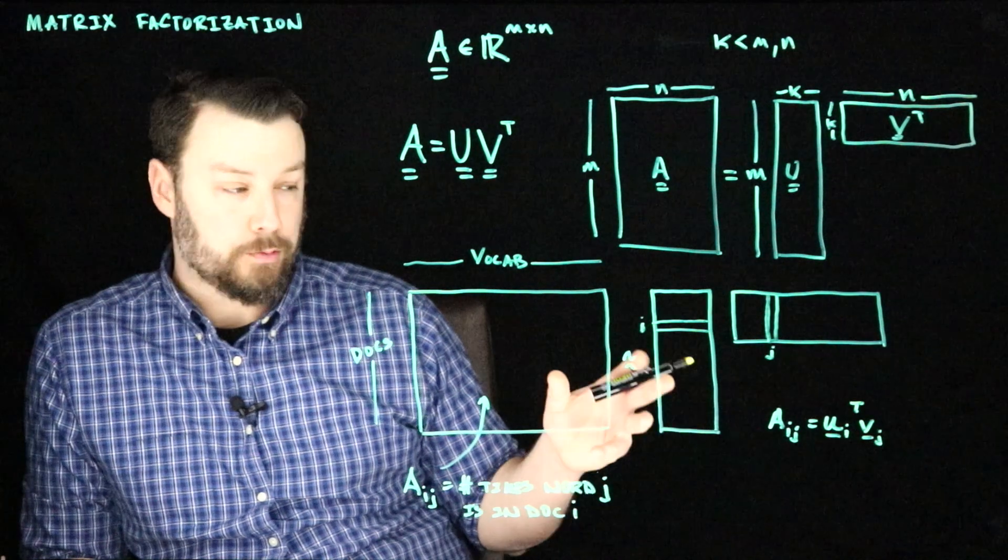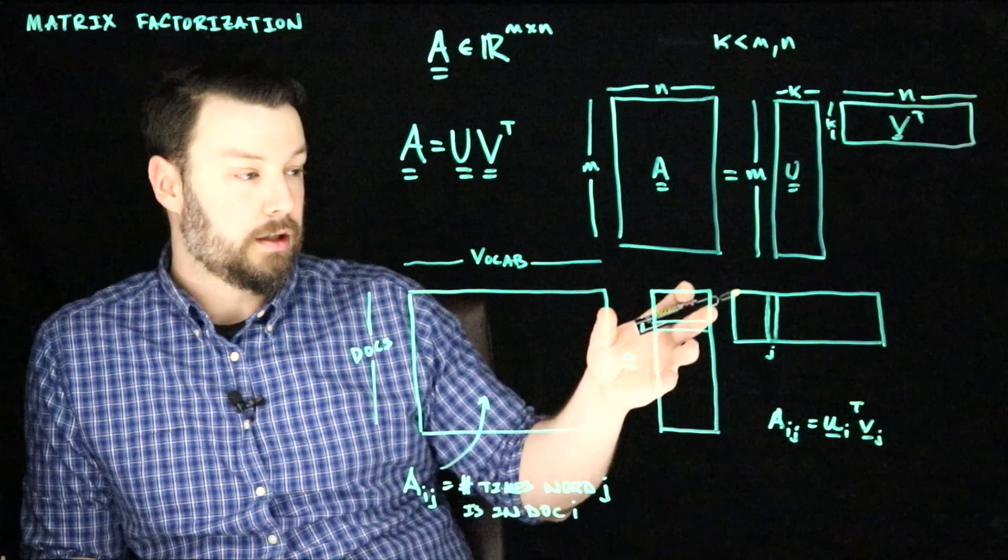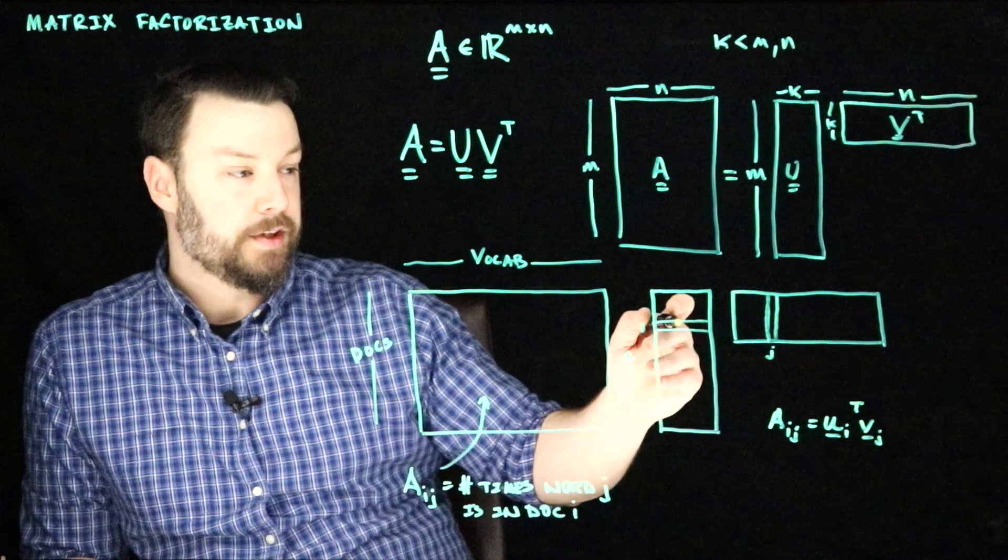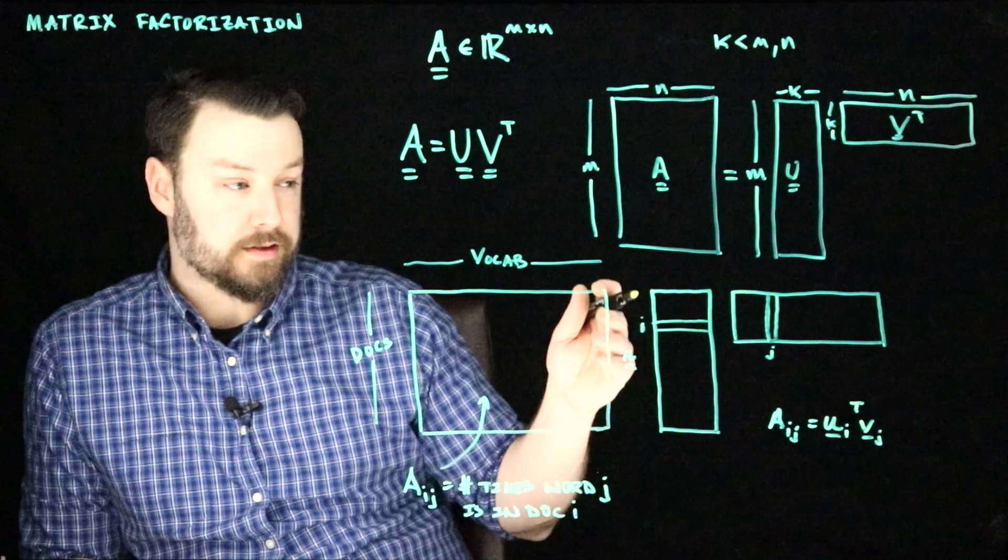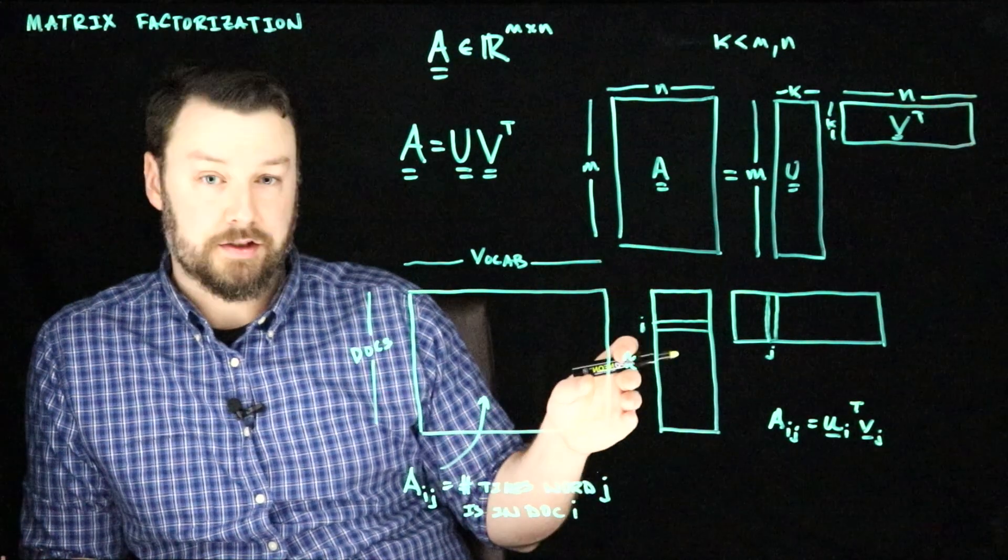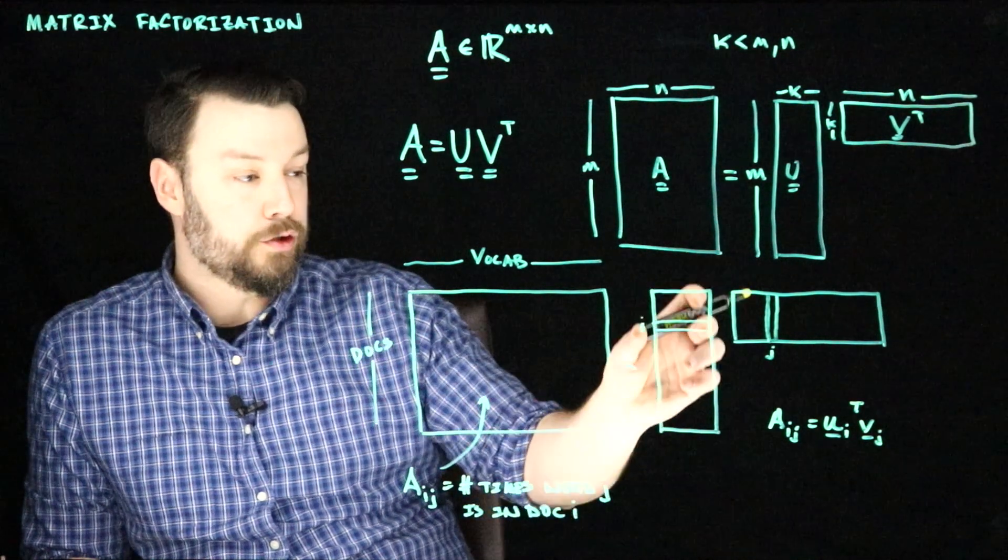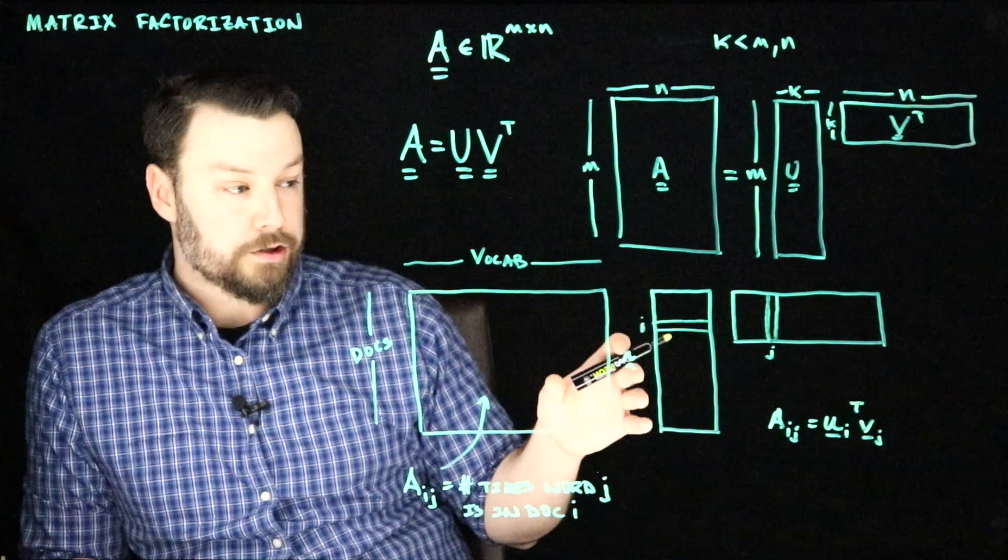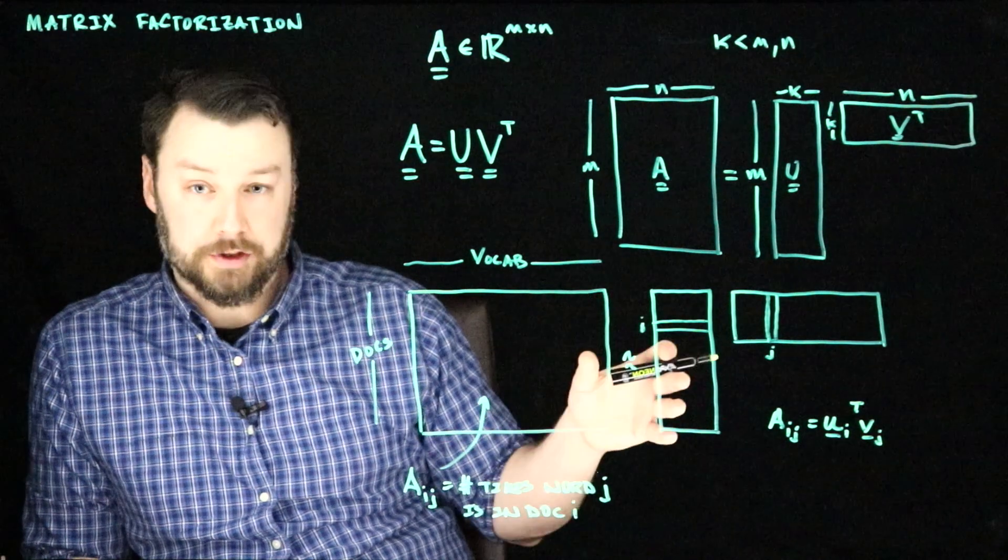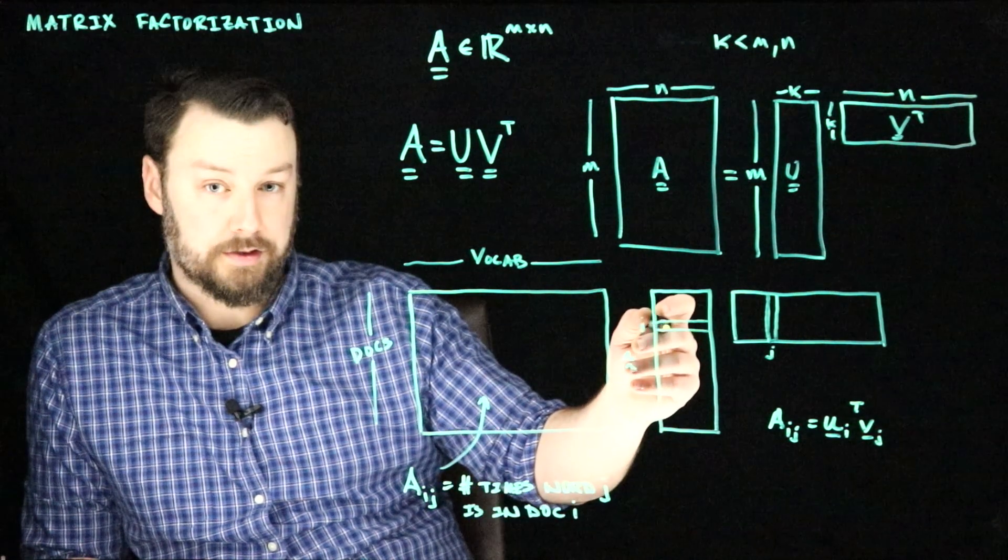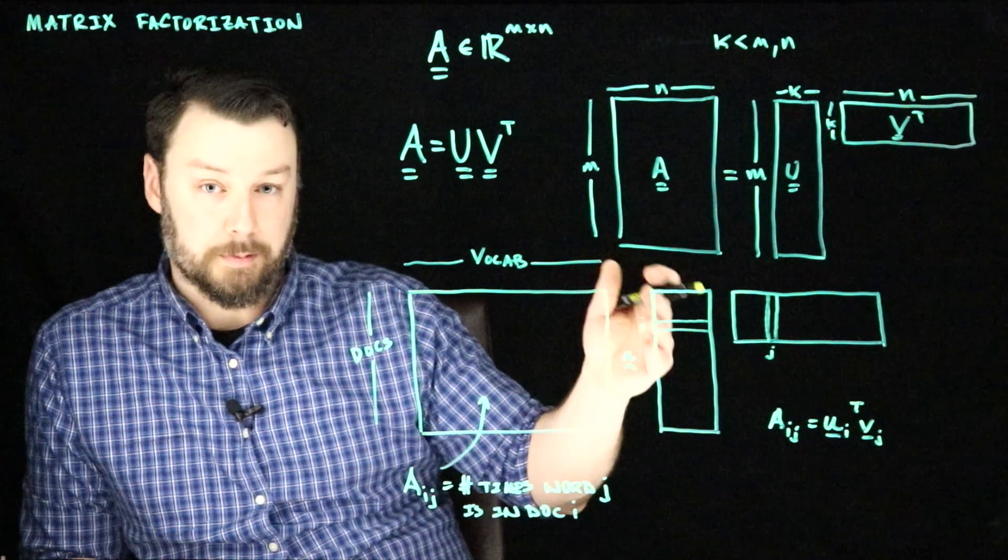So what we hope happens whenever we do this kind of low rank approximation is that the low dimensional space, that is the K dimensions will represent K different kinds of topics. And that the U matrix will represent how much any given document is about those topics. The entry will tend to be non-zero whenever a document is about that topic.